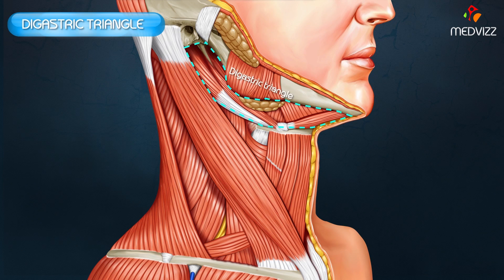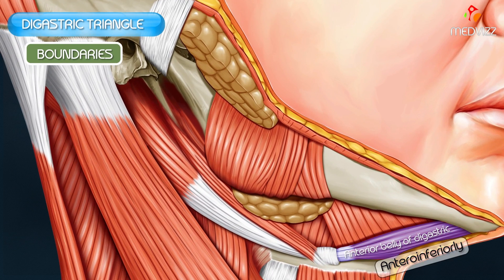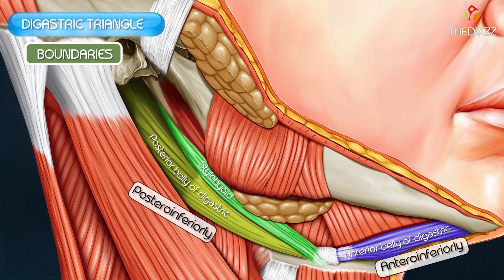What are the boundaries of the digastric triangle? The boundaries of the digastric triangle are as you can see in this picture: anteroinferiorly it is formed by the anterior belly of the digastric, and posteroinferiorly it is formed by the posterior belly of the digastric as well as the stylohyoid muscle.